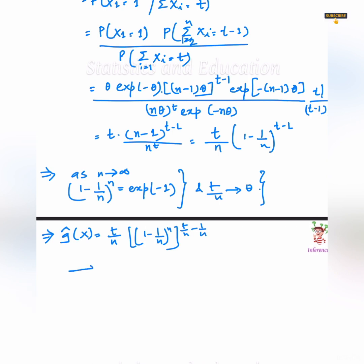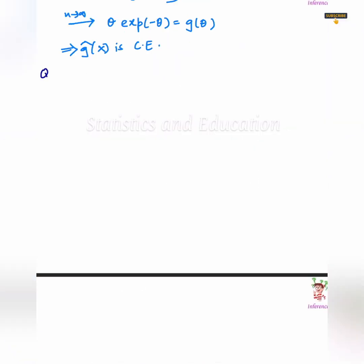So, with a little simplification, we get g hat x's value as n tends to infinity, which is nothing but theta into exp minus theta, which is equal to g theta. Hence, it is unbiased in the limit. So, g hat x is the consistent estimator.